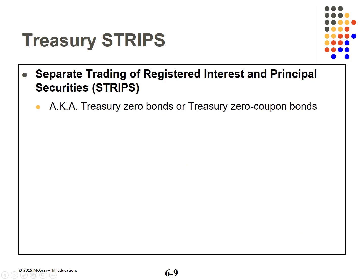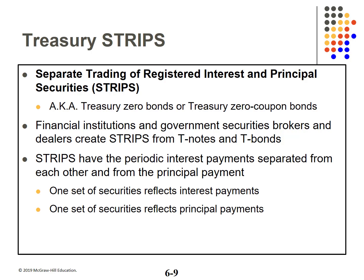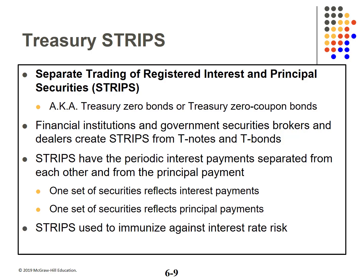STRIPS are Separate Trading of Registered Interest and Principal Securities. These are zero-coupon bonds created by separating the coupons and face value from Treasury notes and bonds. The periodic payments are separated, creating zero-coupon instruments from the interest or principal payments. STRIPS can be used to immunize against interest rate risk.